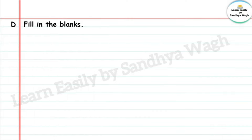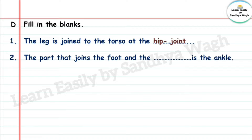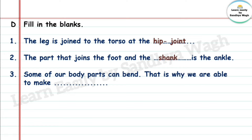Section D — Fill in the blanks. Question 1: The leg is joined to the torso at the hip joint. Question 2: The part that joins the foot and the shank is the ankle. Question 3: Some of our body parts can bend; that is why we are able to make movements.